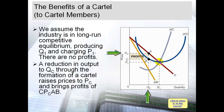So what does the cartel do? The first step is to reduce output. When you reduce output, price increases. The cartel reduced output to QC. To find the new price, you stop at the demand curve — this gives you PC, the cartel price.